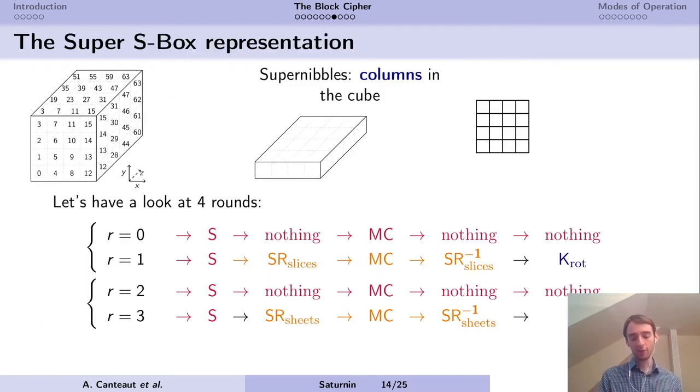Now let's go to the Super S-Box representation of the cipher. We're going to take this cube. The cube is nice, but two dimensions is better, so we're going to squeeze it. The super nibbles in the Super S-Box representation are going to be the columns of the cube, so there are 16 bits. Let's have a look at four rounds of Saturnin. The first round applies the S-Box layer and mixed columns, with no shift rows and no key addition. Round one applies an S-Box layer, shift rows in slices, mixed column, shift rows slices inverse, and addition of the key. Then we have the S-Box layer, mixed columns, S-Box layer, shift rows, and mixed columns in the sheets.